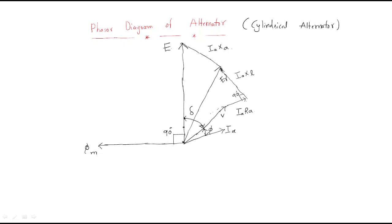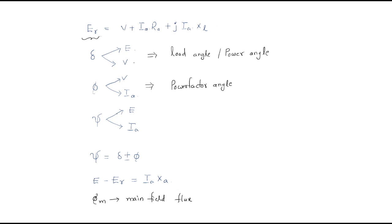The power factor angle is between the voltage and current vectors. The combination of the load angle and the power factor angle is known as psi. The angle between E and ia is known as the internal power factor angle, also called psi.